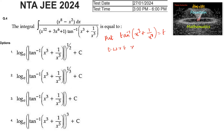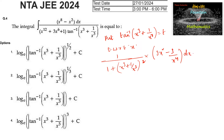we have 1 by (1 plus (x power 3 plus 1 by x power 3) whole square) into differentiation of x power 3 is 3x square, and differentiation of 1 by x power 3 is minus 3 divided by x power 4. dx is equal to dt. Upon simplifying we get 1 upon (1 plus x power 6 plus 1 by x power 6 plus 2) into